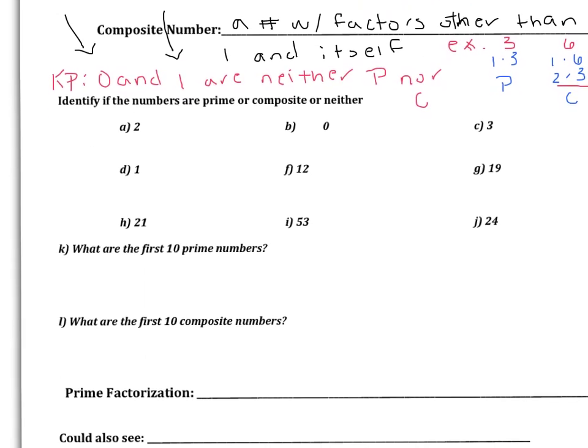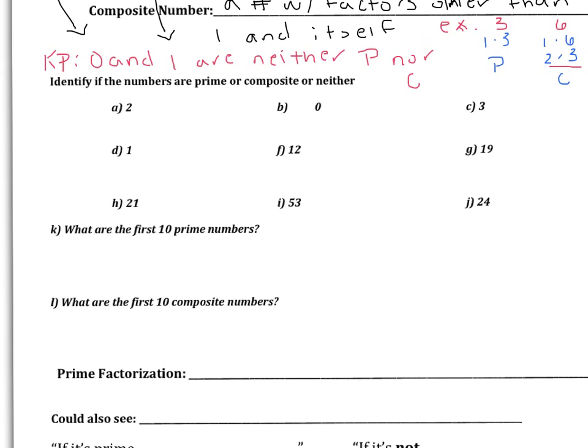Let's do one or two quick examples together before you try this on your own. Let's say I want to know if 2 is prime or composite. I can make a factor table if I'm not sure, but brainstorming: 2 has a factor of 2 times 1. I can't think of any other factors for 2, so that means it's prime — its only factors are 1 and itself.